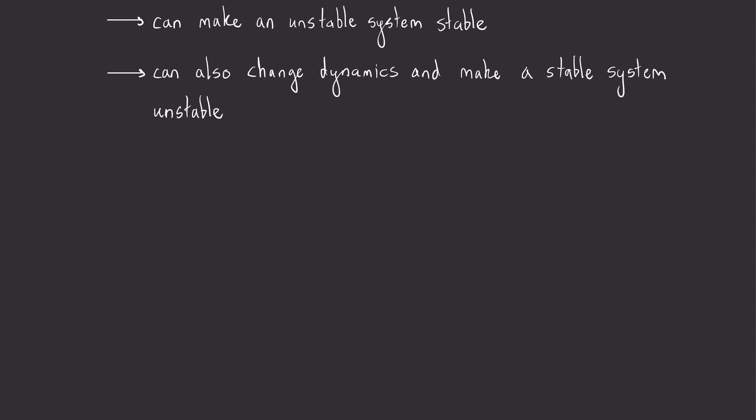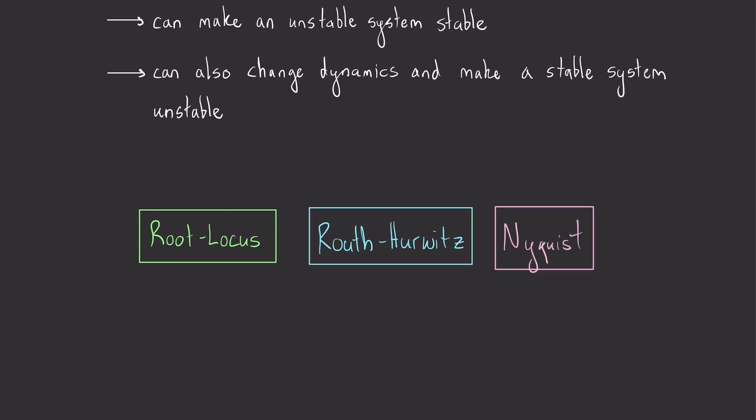To evaluate the system stability, you'll see methods like root locus, Routh-Hurwitz, and the Nyquist stability criteria. These methods allow you to graphically inquire about how your controller that you appended actually altered your fundamental system dynamics and fundamental system stability.